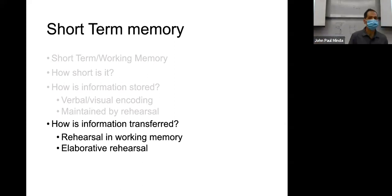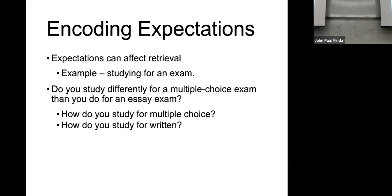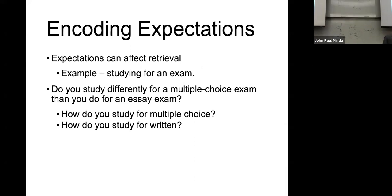I also want to talk about elaborative rehearsal. One of the examples involves how our intention or how we encode information comes from a study on how people study for recall versus recognition. Does anyone want to give a quick definition of recall versus recognition in memory tasks? A student responds: recognition sounds like more implicit, more of an unconscious process, kind of like visual binding — recall is explicitly part of that.